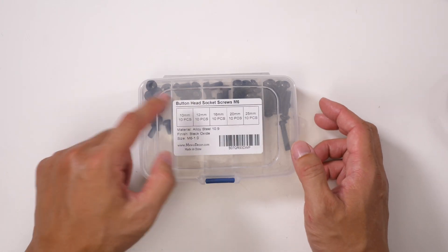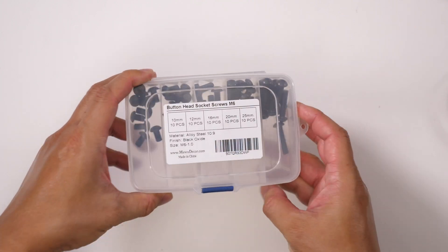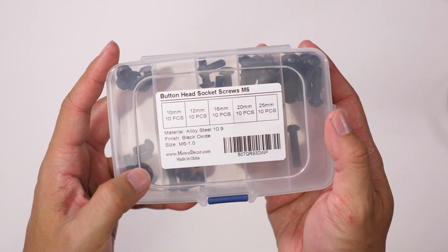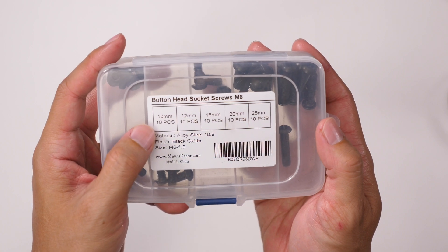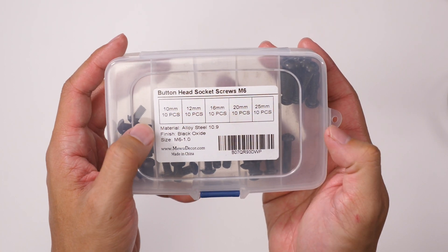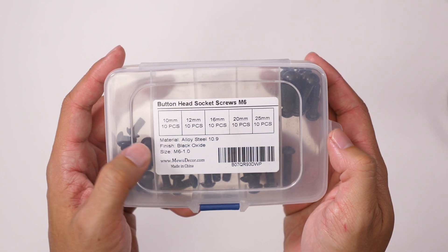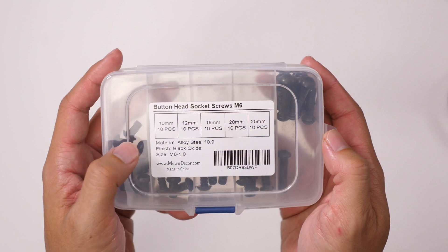These are button head socket screws in an M6 size. They come in various lengths: 10, 12, 20, and 25 millimeter. There are 10 of each size in here. It is made of an alloy steel and it has a black oxide finish.